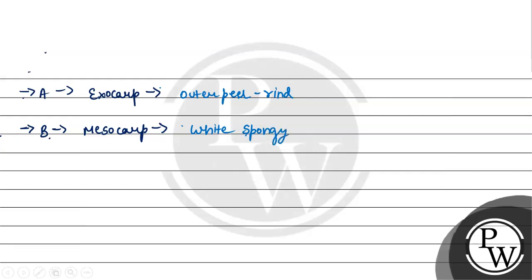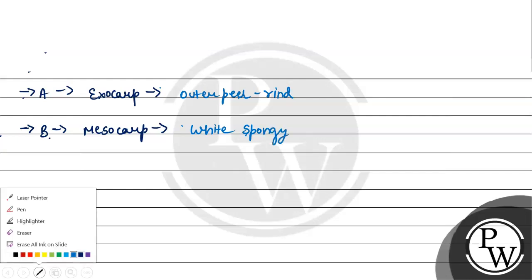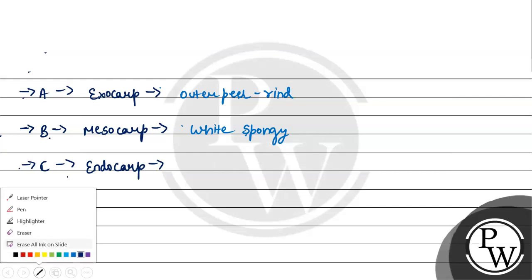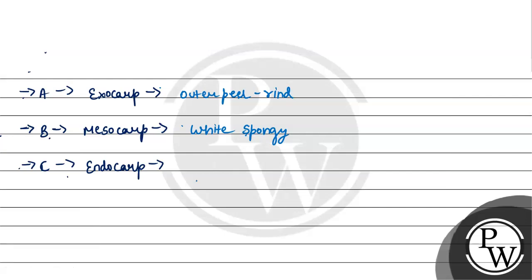Option number C is endocarp. Endocarp जो होता है, यह inner most layer होता है, and lemon fruit में इस inner most layer में juice sacks and vesicles present होते हैं. So जो main juicy area होता है, वो यह endocarp होता है, and also इसके पास hair-like structures भी present होते हैं.